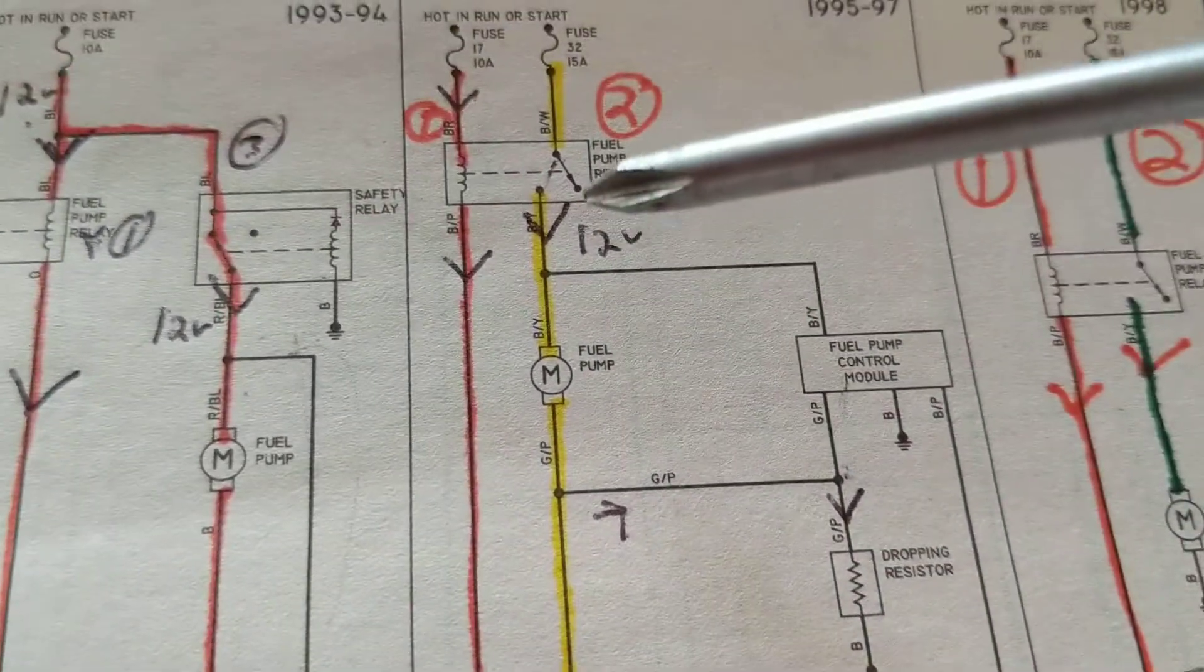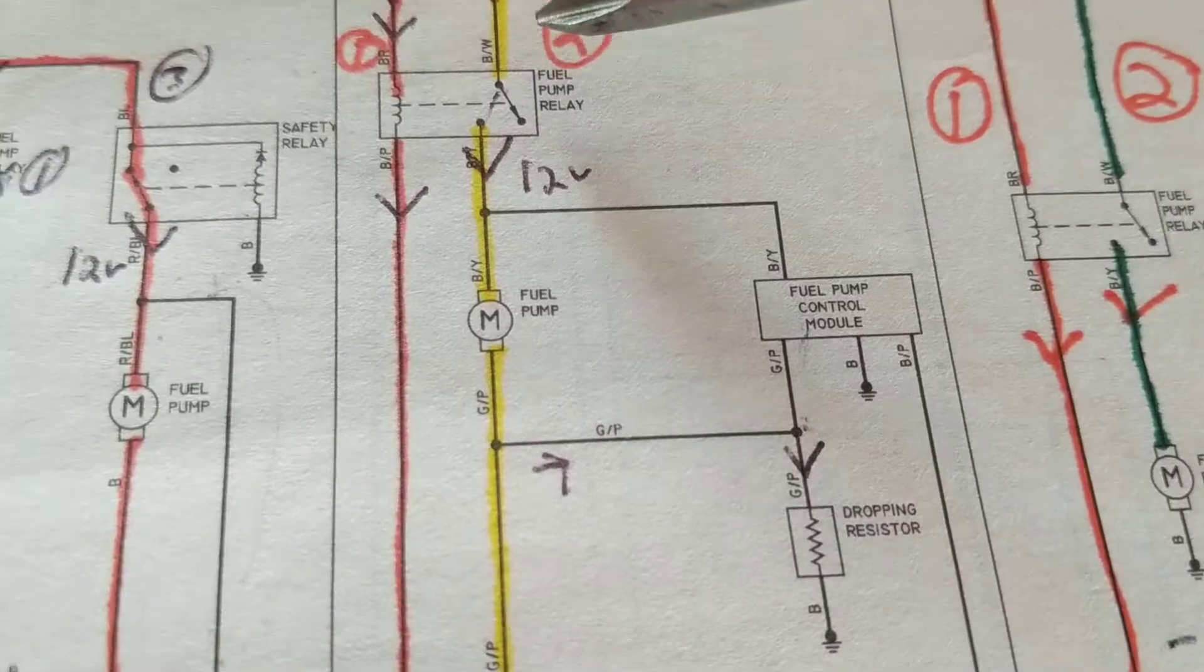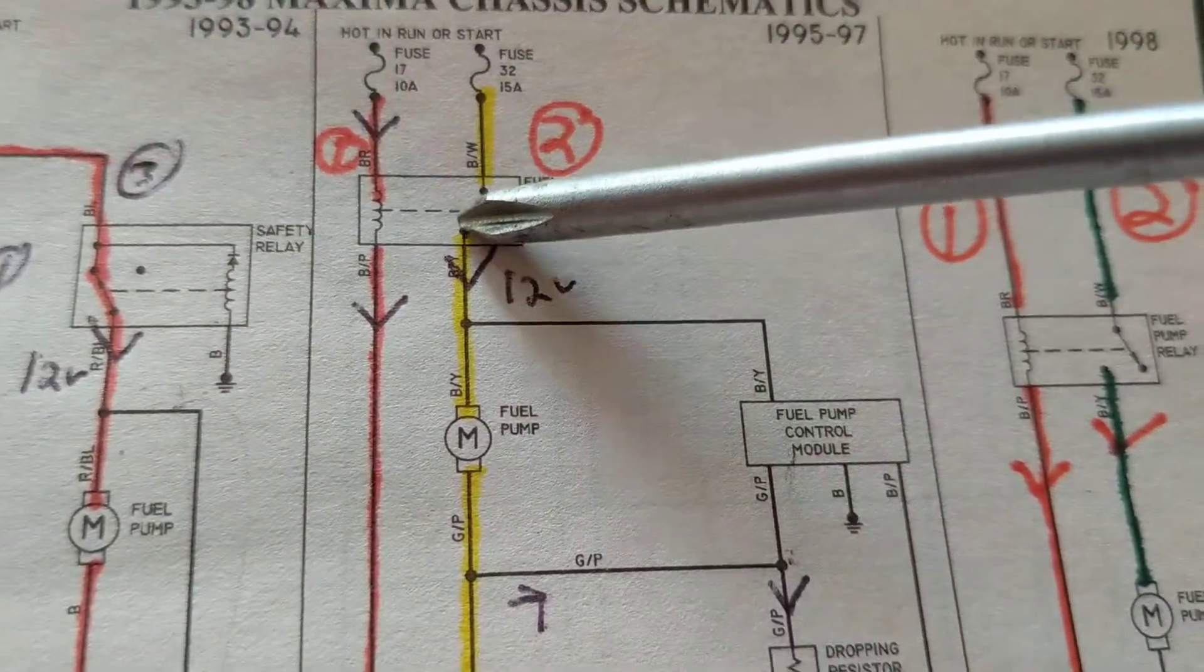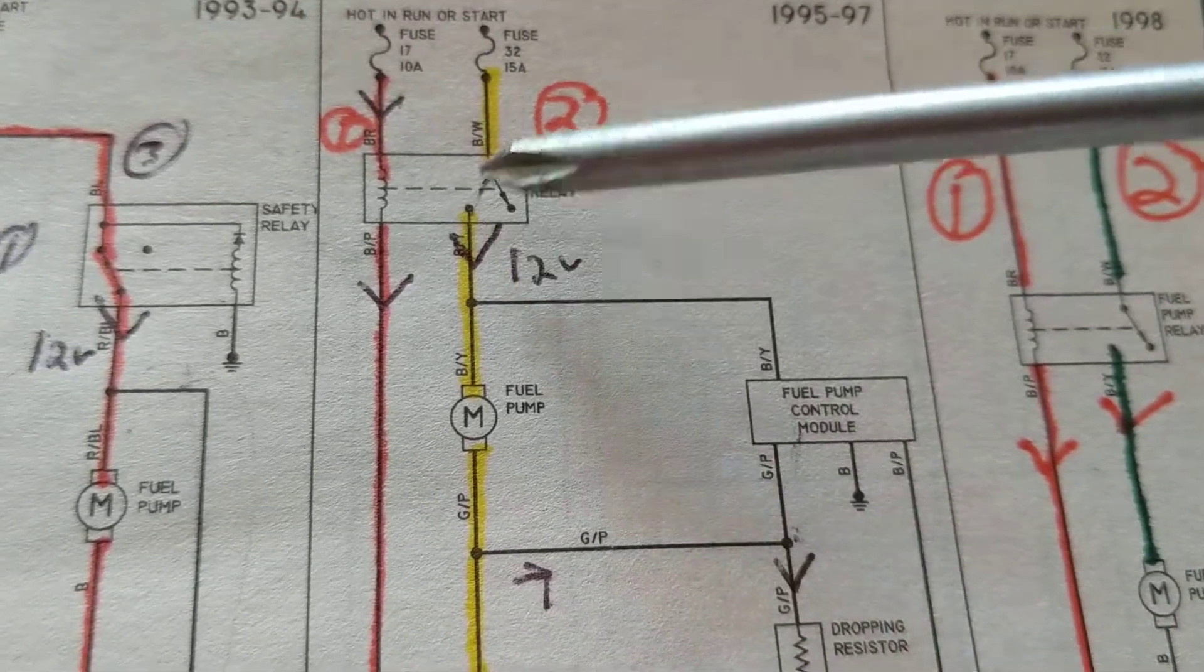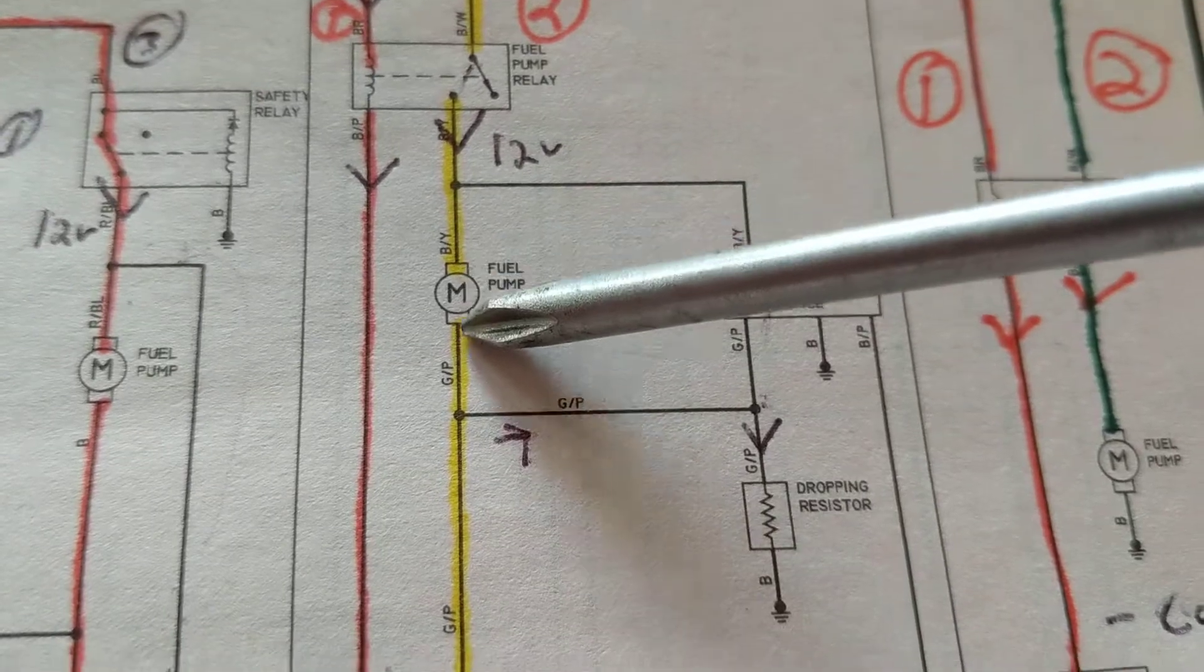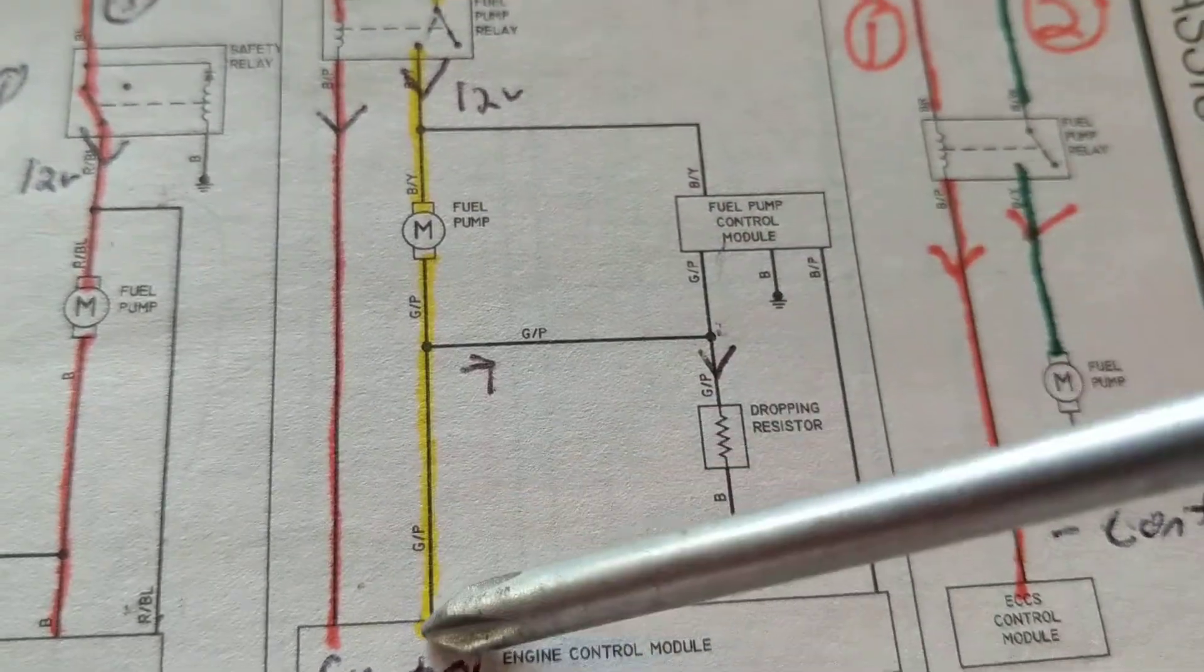Again, maybe through a transistor being turned on, whatever it is, then we can establish this one. This will be in this position, it'll be closed like this. Therefore current can flow. Now here it can flow to this module and it can flow through this, says dropping resistance.